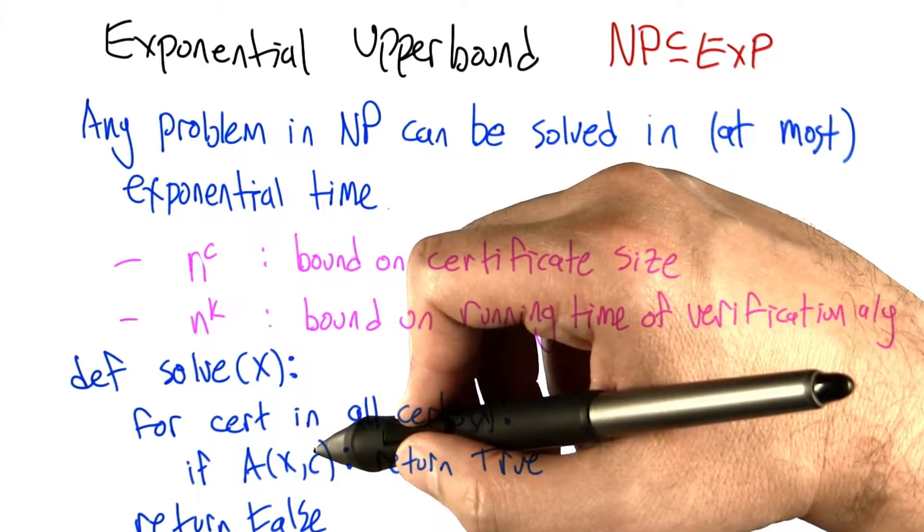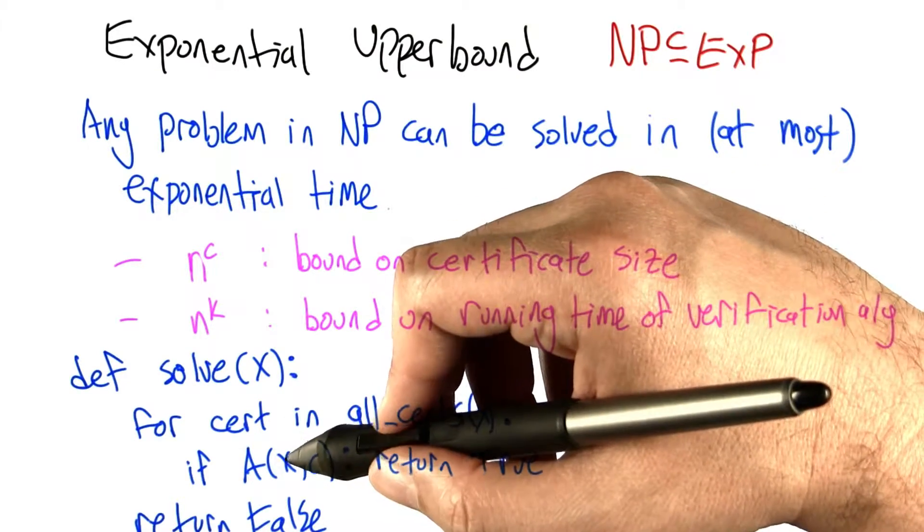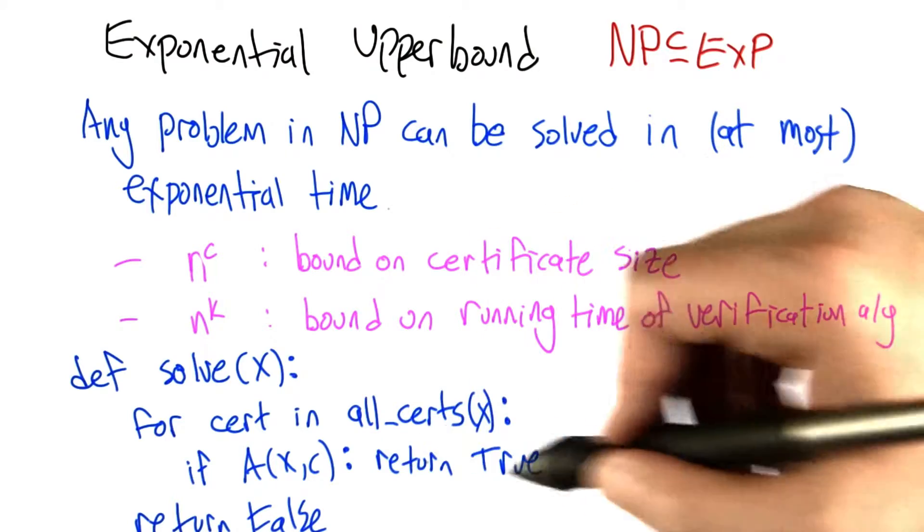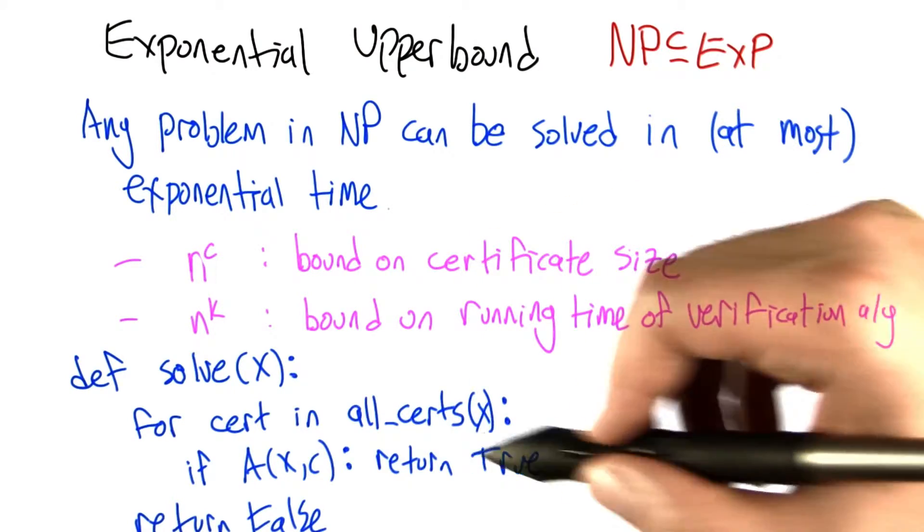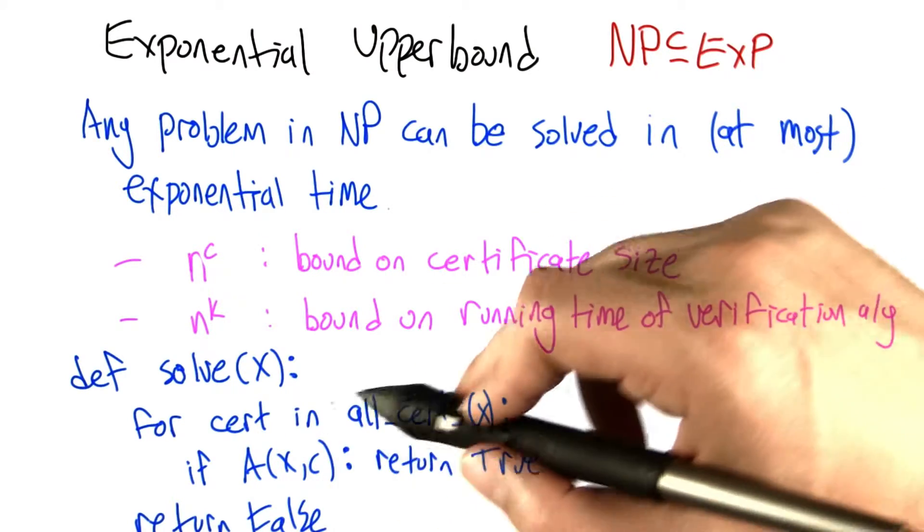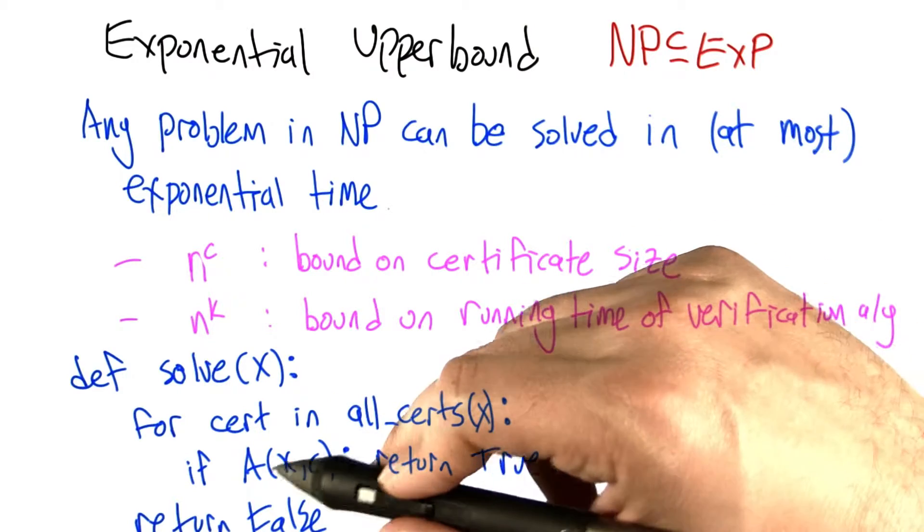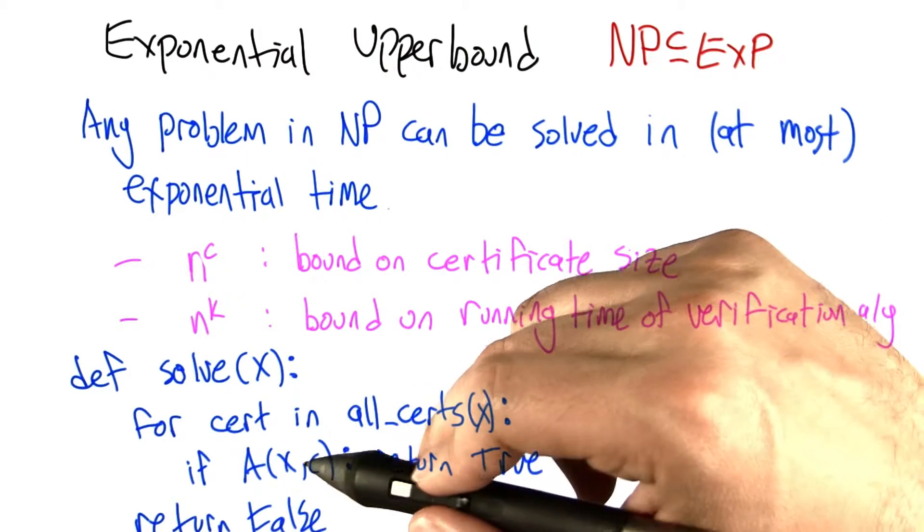If the verification algorithm ever says that's something that shows that x is true, then we can return true as the solution for the problem. And if we run through all the possible certificates and none of them make the verification algorithm return true, then we can return false.